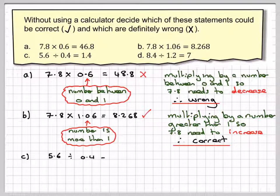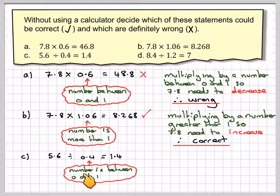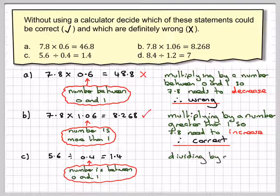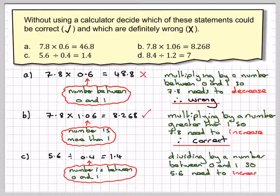C. 5.6 divided by 0.4 is equal to 1.4. So the number here is 0.4. Remember we're dividing, not multiplying here. So the number is 0.4. The number is between 0 and 1. Dividing by a number between 0 and 1, therefore 5.6 needs to decrease. So 5.6 is, sorry, it needs to increase. So 5.6 has actually decreased. Therefore this one is definitely wrong.